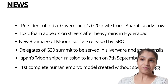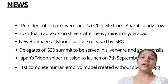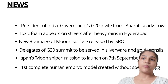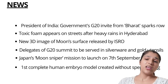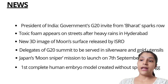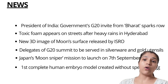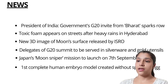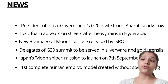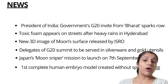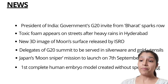First of all: President of India's Government G20 invite — G20 has been sent to India. Then toxic forms appeared near the street, and heavy rain falls under Hyderabad. New 3D image of moon surface released by ISRO. The delegates of G20 will be served in silverware and gold utensils. The Moon Sniper mission will be launched on September 7th. And the first complete human embryo model created without sperm and egg — the human embryo will be created without sperm and egg.